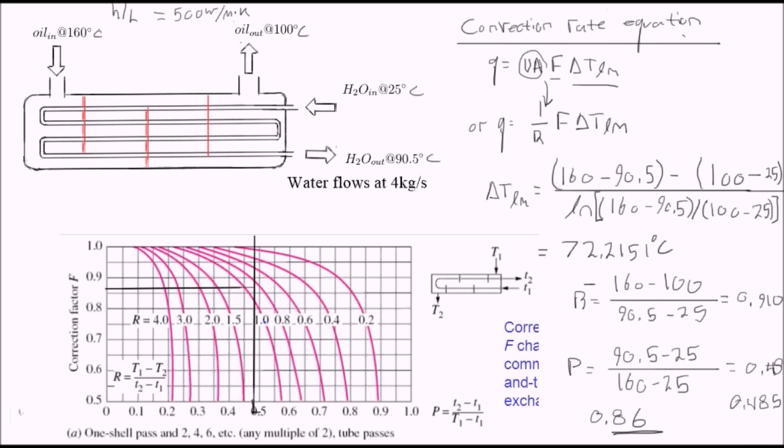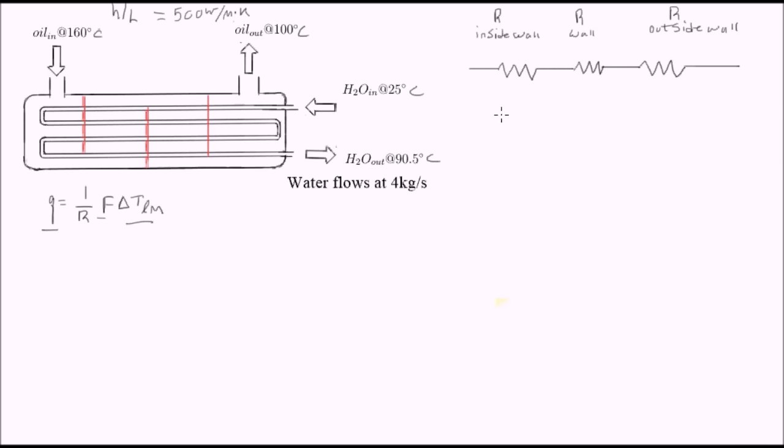So maybe 0.86. That is about the rough value for our correction factor. So we have everything we need right now to solve for length, except for thermal resistance, R. We have the correction factor, the log mean temperature difference, as well as the heat flow rate. So let's go ahead and solve for R. And the length of the pipe, that'll be included in the radius term. That's our unknown variable.